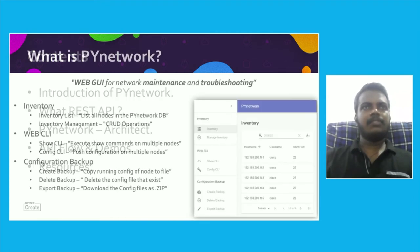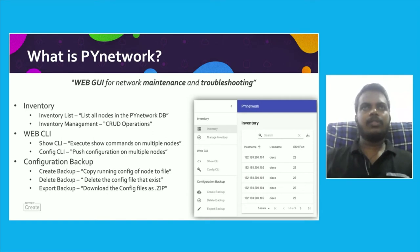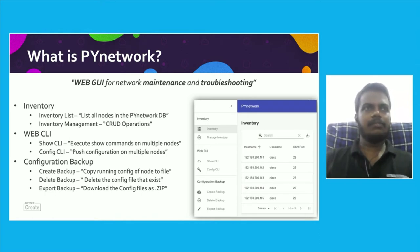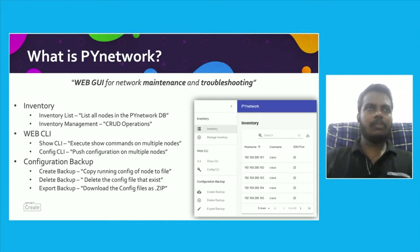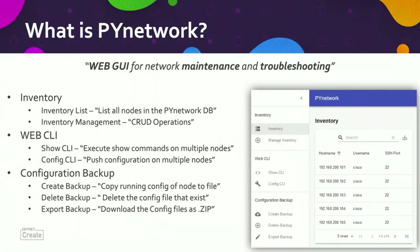The Pi Network is a WebGUI tool for maintaining and troubleshooting the network. The current features available include inventory, where you can add, remove, edit, and manage network devices and network node information inside the Pi Network database. WebCLI lets you send commands as well as push configuration to a device or multiple devices.